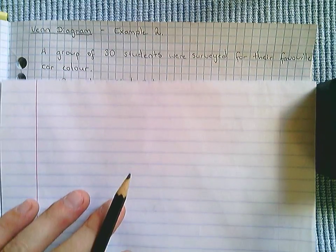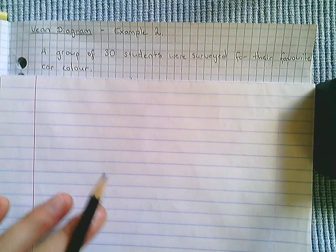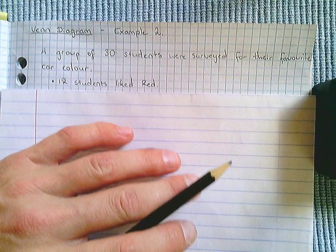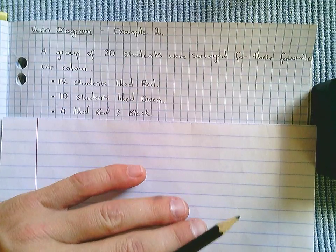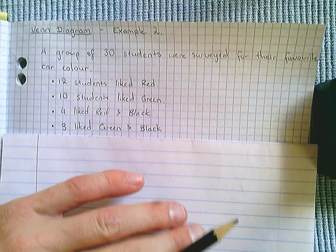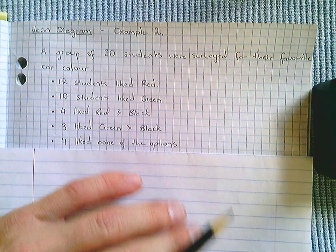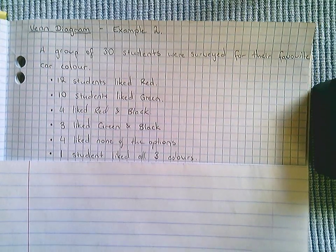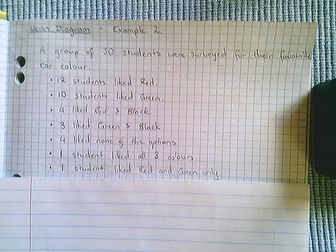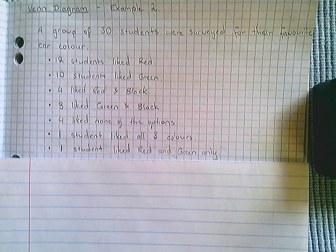The question reads, or the information reads: a group of 30 students were surveyed for their favourite car colour. 12 students liked red, 10 students liked green, 4 liked red and black, 3 liked green and black, 4 liked none of the options, 1 student liked all three colours, and 1 student liked red and green only.